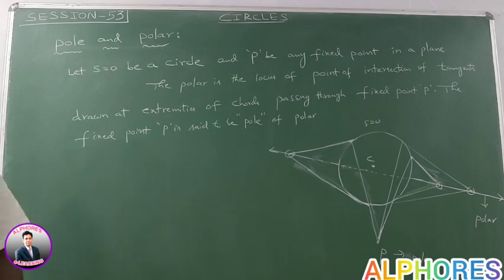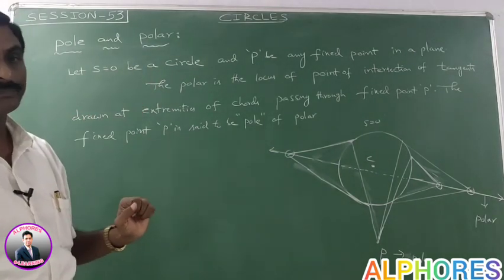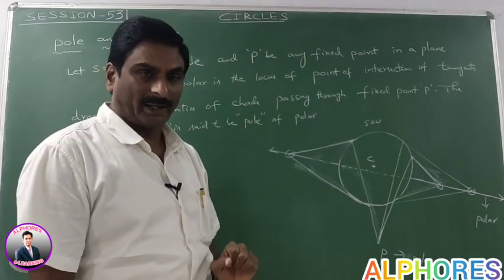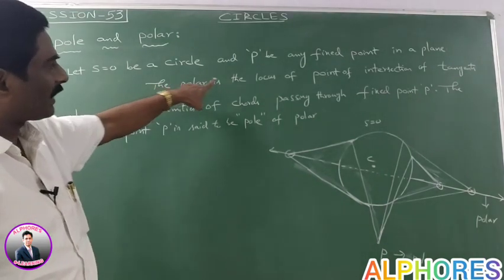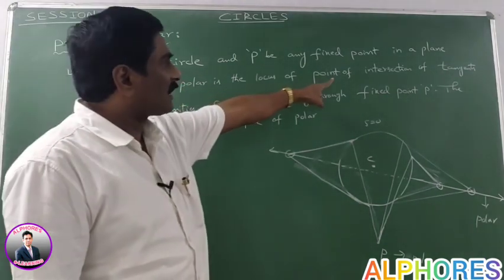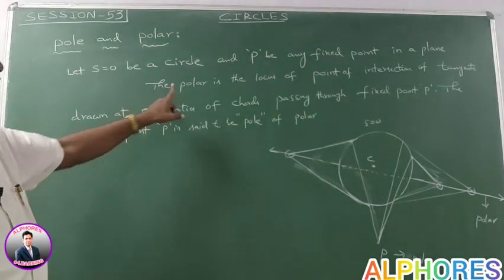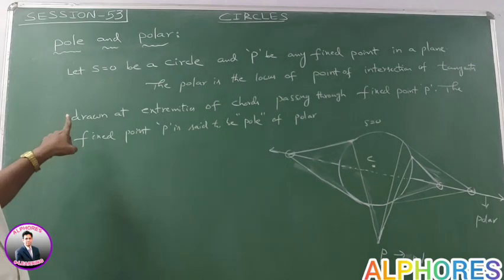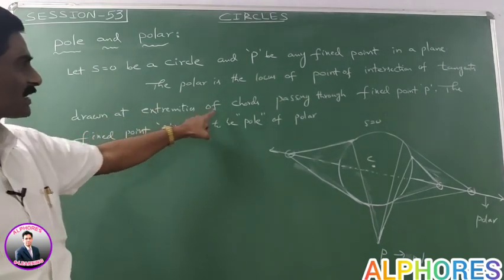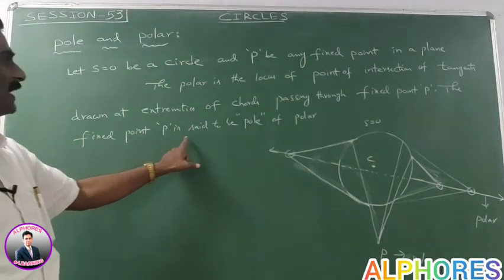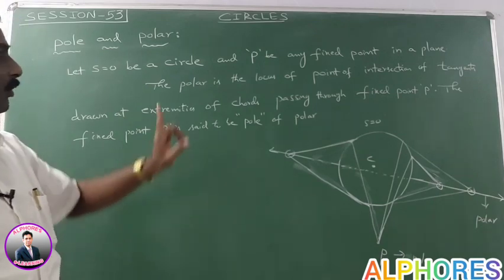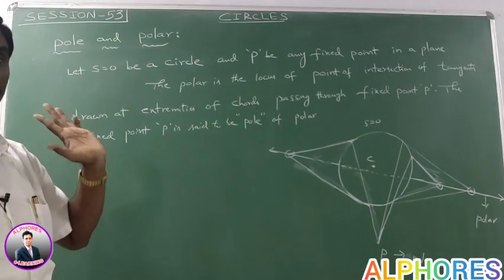What is the pole? What is the polar? Let S=0 be a circle and P be any fixed point in the same plane. The polar is the locus of point of intersection of tangents drawn at extremities of the chords passing through fixed point P. The fixed point P is said to be pole of polar, and the locus is said to be polar.